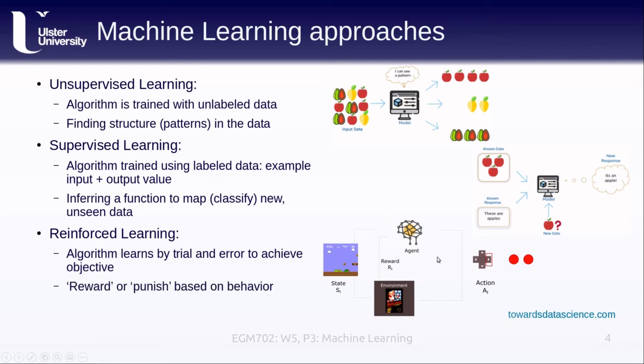In a sense with this we are rewarding or punishing, and this is sort of an imperfect analogy, the computer or the algorithm based on what the algorithm does in a particular situation to help it learn what to do in certain situations.